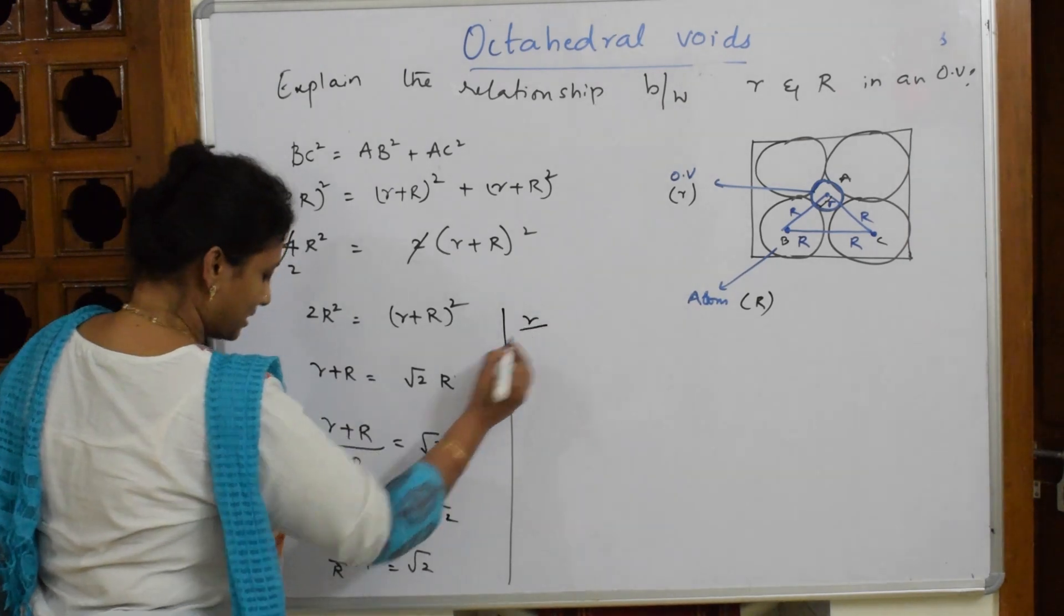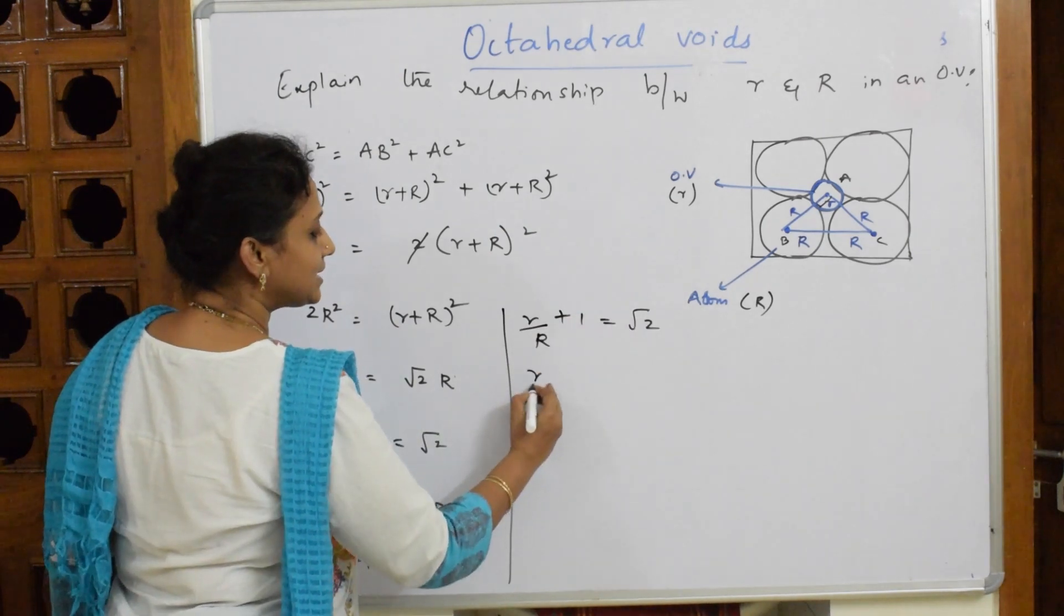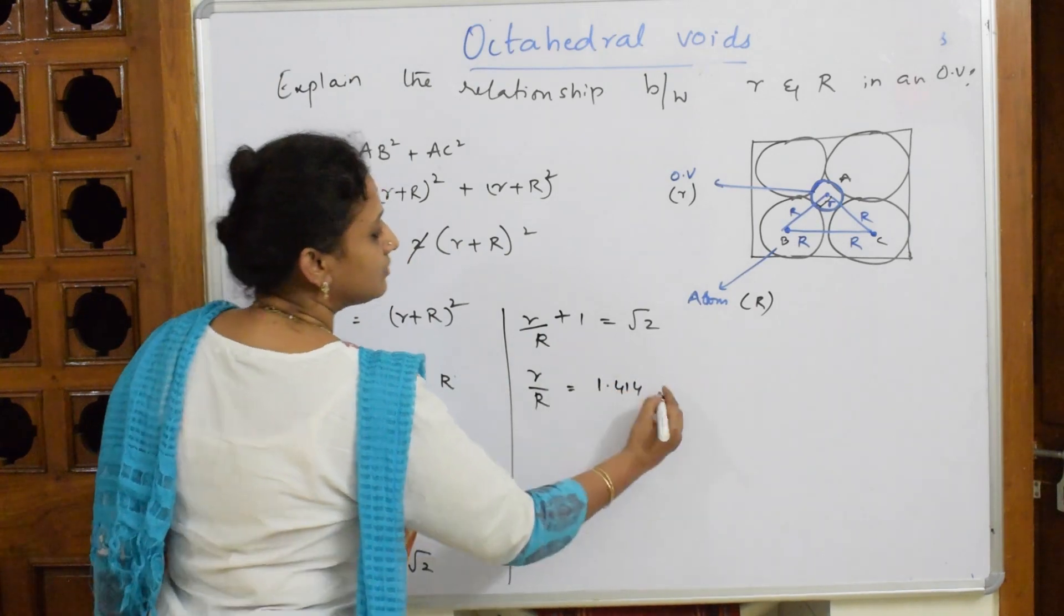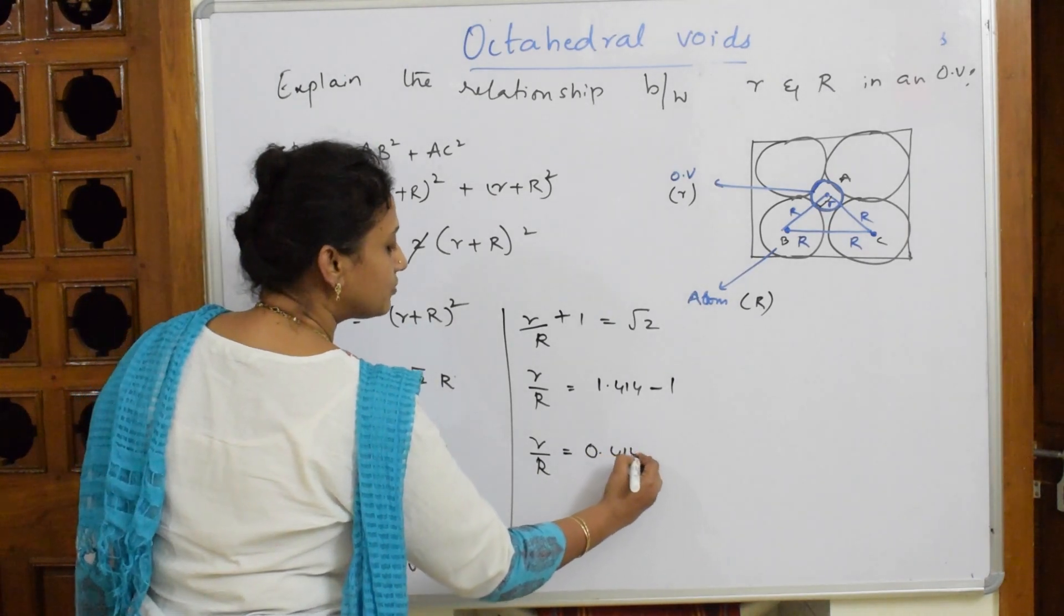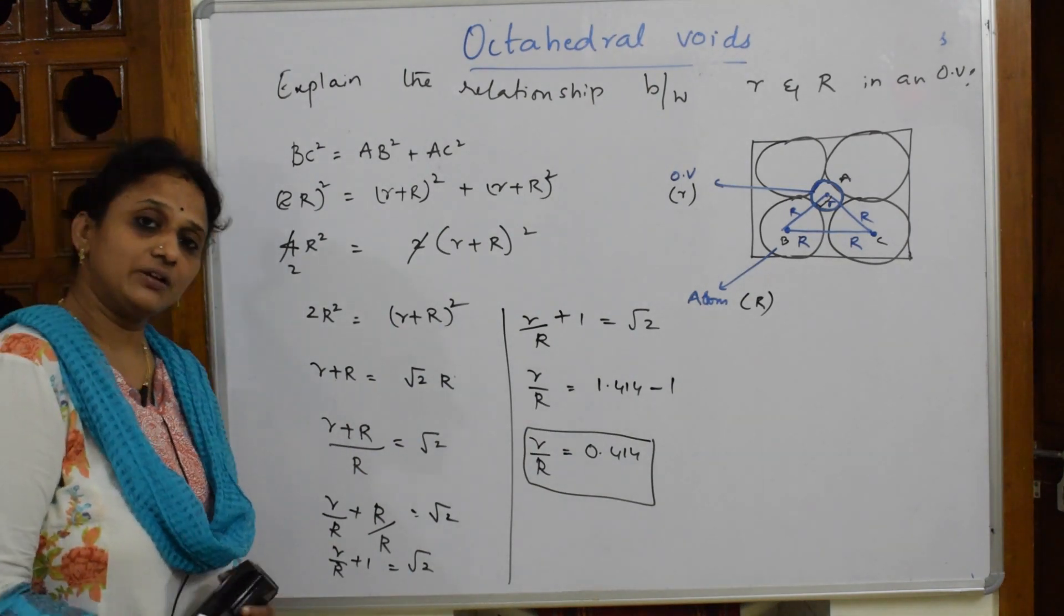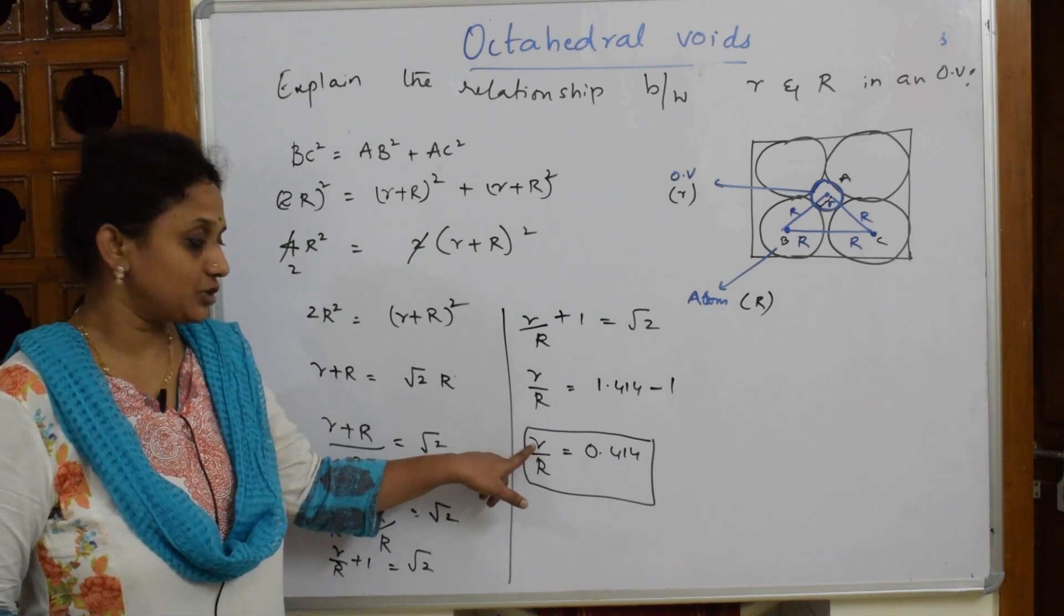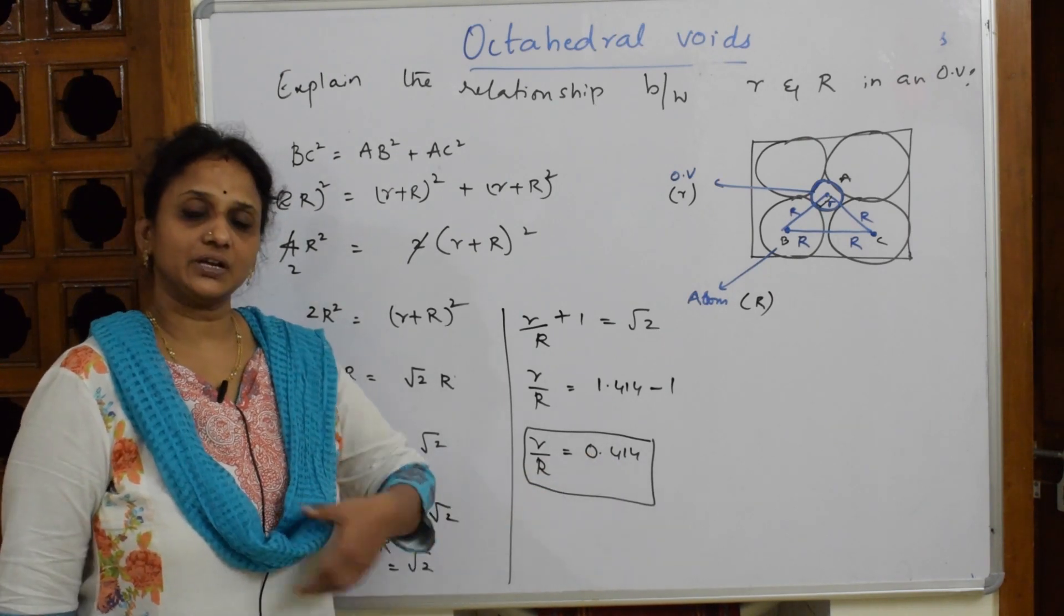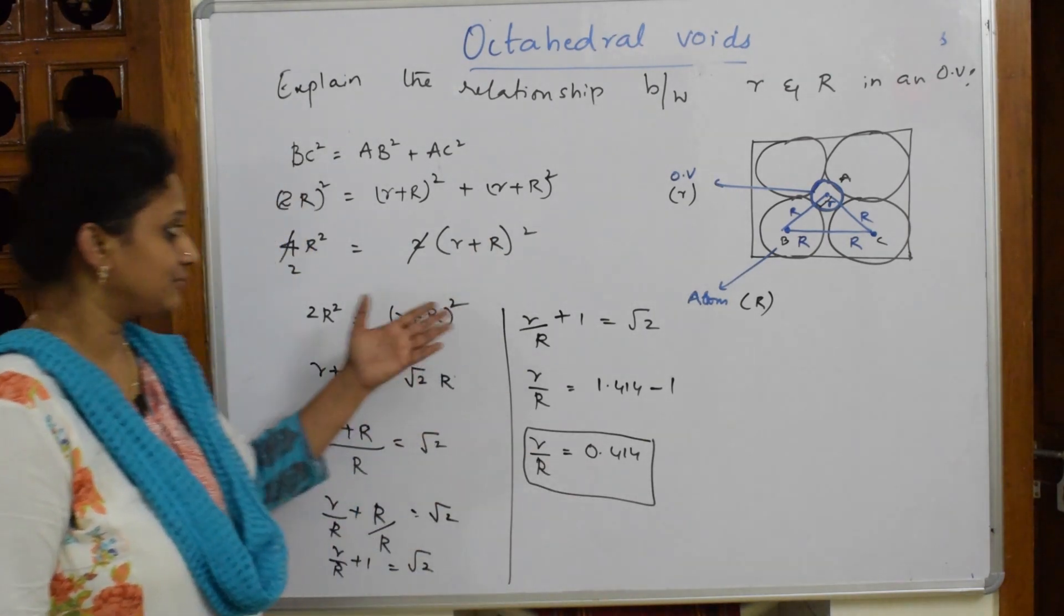Now I am going to take this to the other side: r/R = √2 - 1. The value is 1.414 minus 1, so this becomes r/R = 0.414. Now this is the ratio - this is the radius of the octahedral void. What did we get now? The ratio of the octahedral void radius and the radius of the sphere. Whenever somebody asks you the relation, you can just derive this and show and finally conclude your answer.